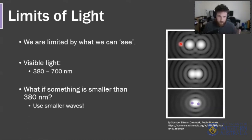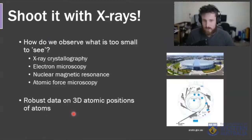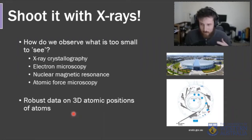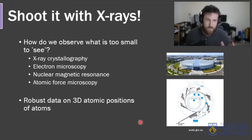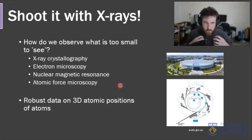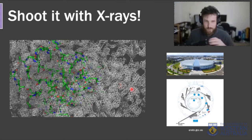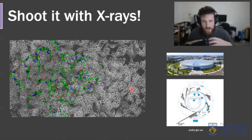You can get around this by using smaller waves. One strategy my lab and many others use is x-rays — they're a lot smaller, and while we use them for bone imaging, this is a different application. We can use a facility like the Australian Synchrotron, basically a city-block-sized x-ray generator. There are other techniques too, like electron microscopy, NMR, and AFM. The key point is you get robust biological data on the 3D positions of atoms. That data looks like this gray map showing where electrons — and by inference, atoms — are.